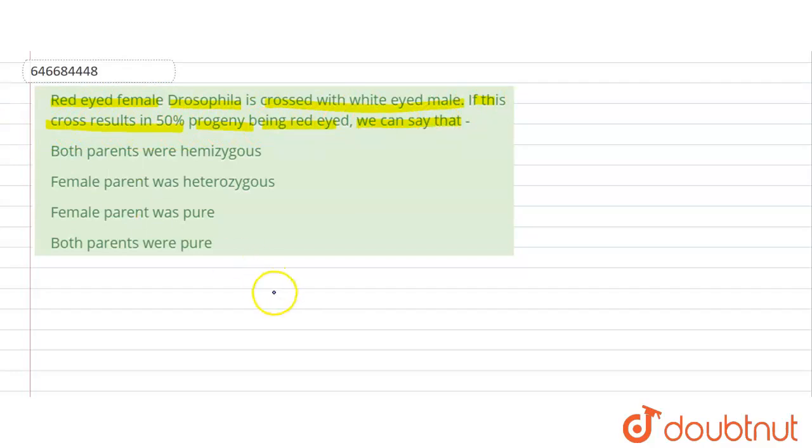Okay, so what we have done: we have taken the red-eyed female, this is a red-eyed female Drosophila, and the male over here is the white-eyed. Let's draw the red in red color, then it will be better.